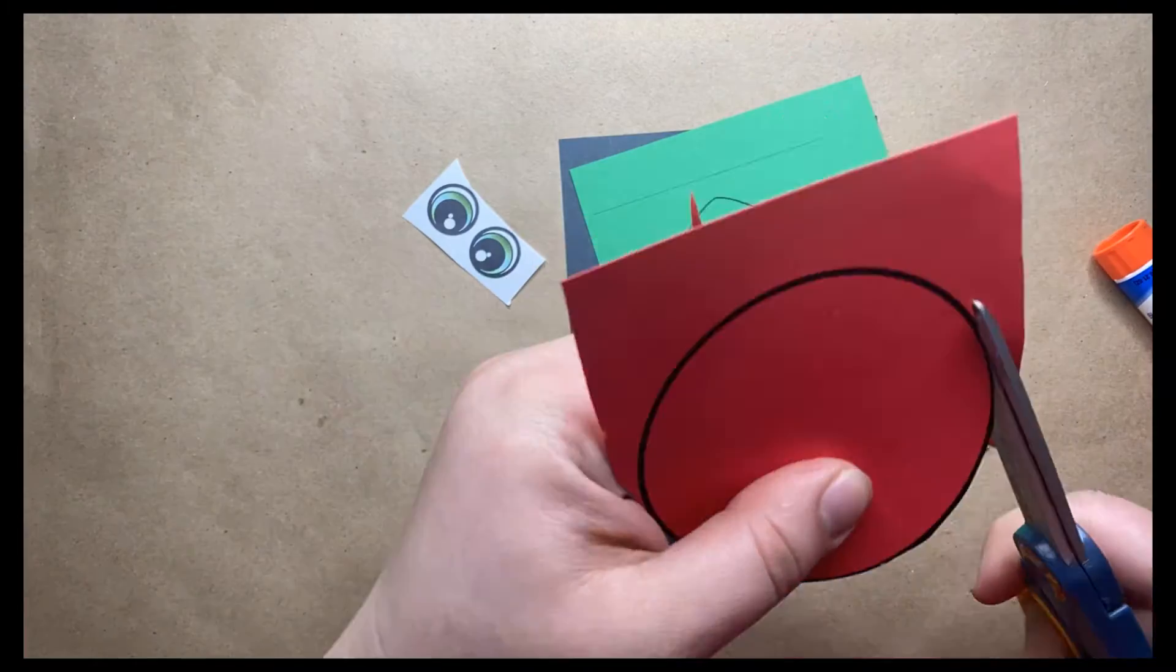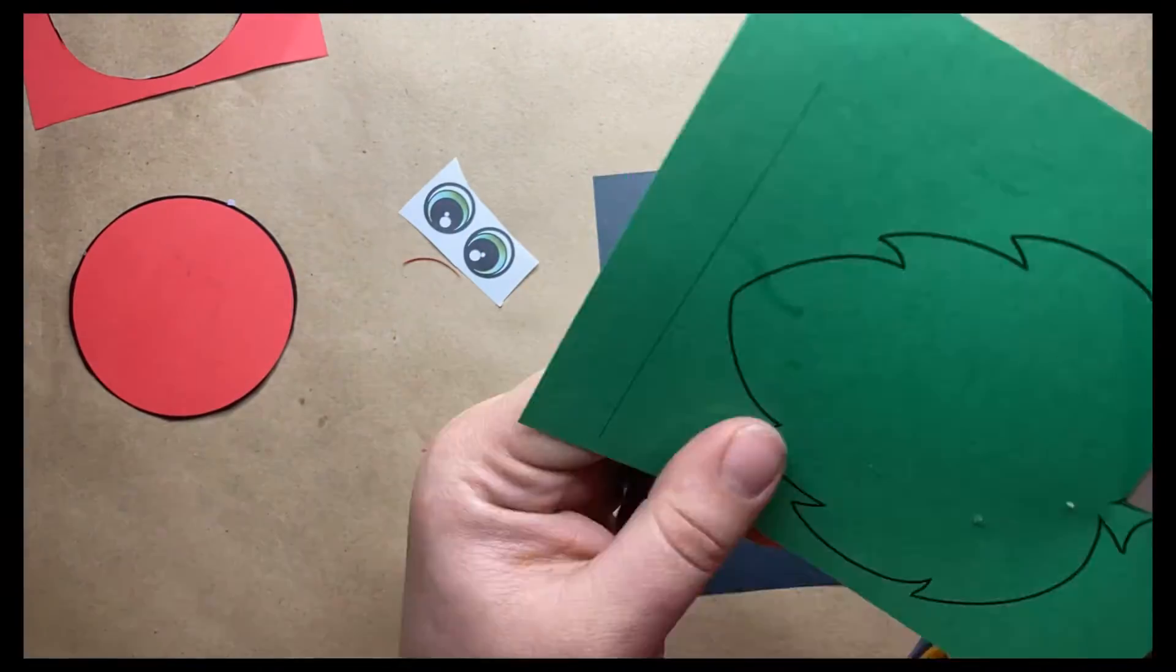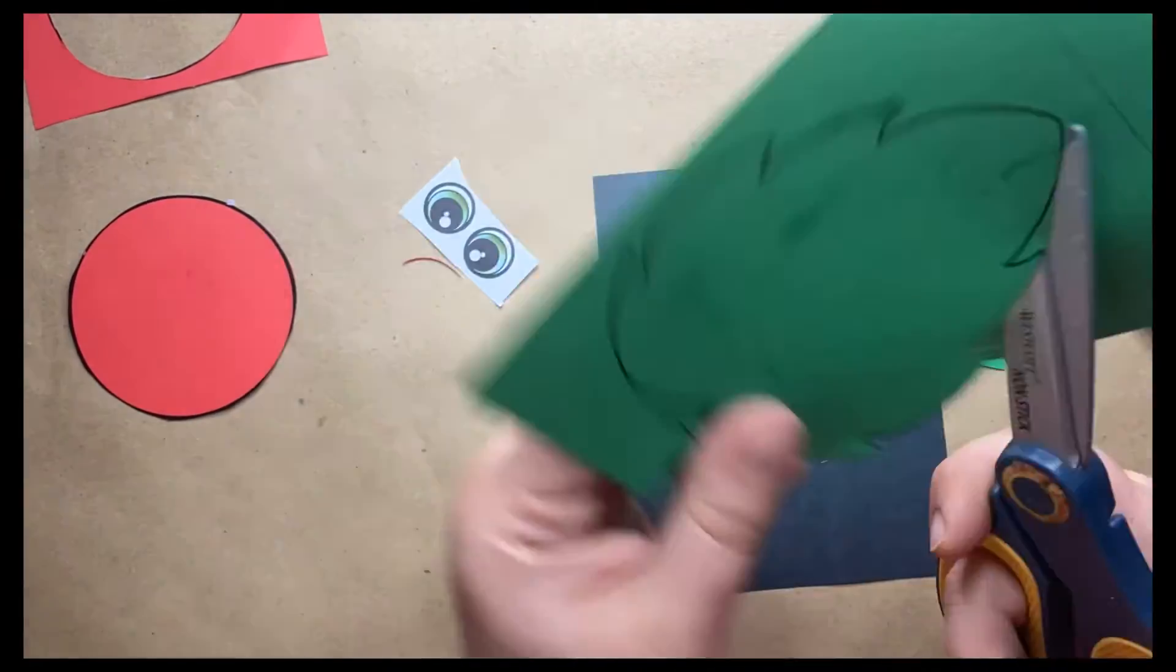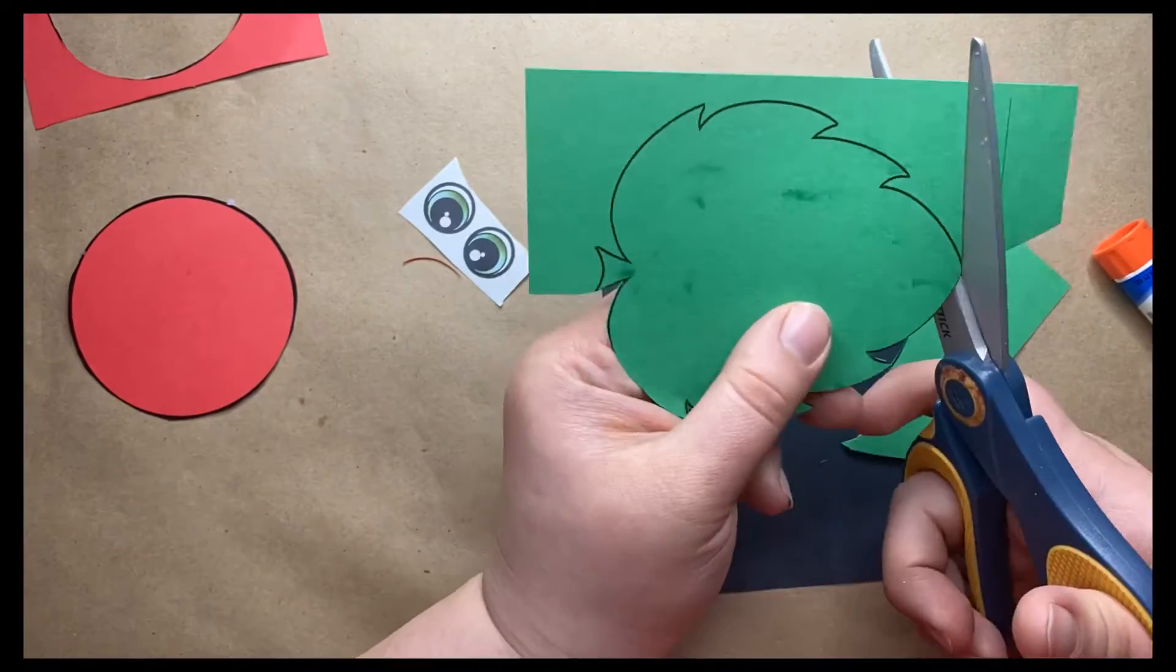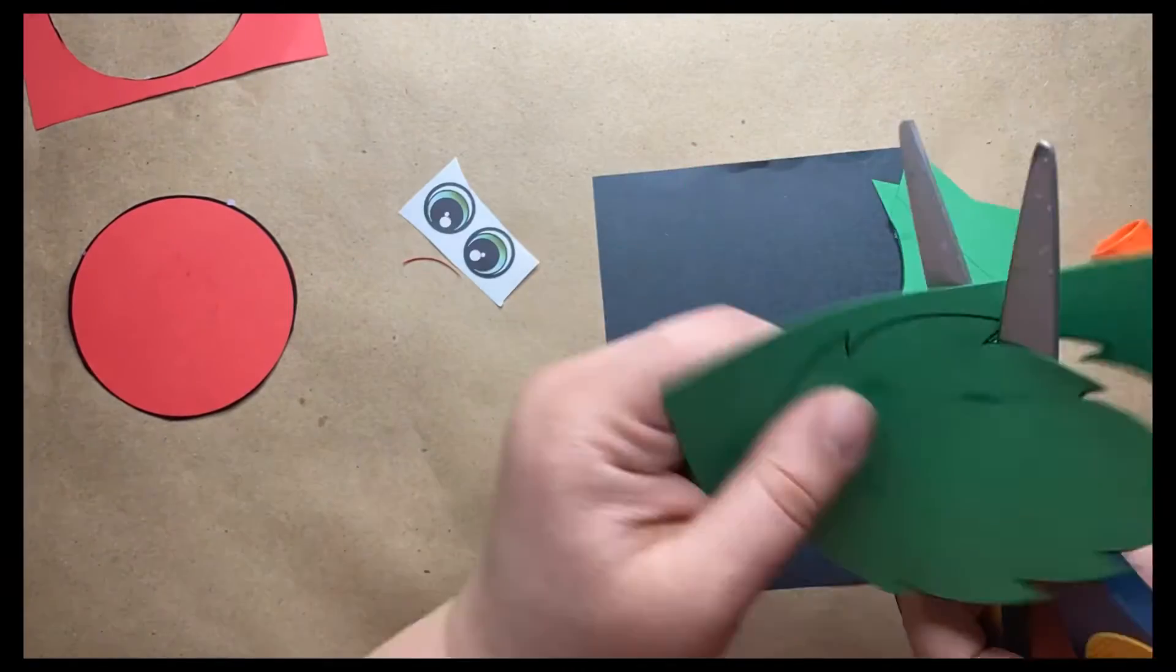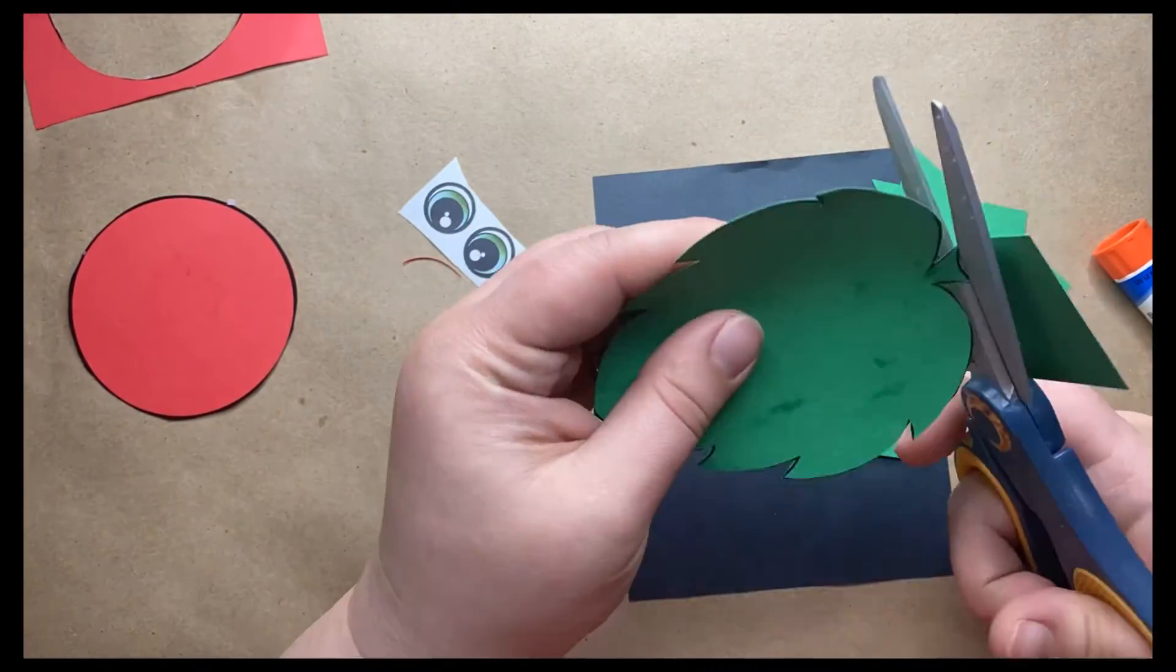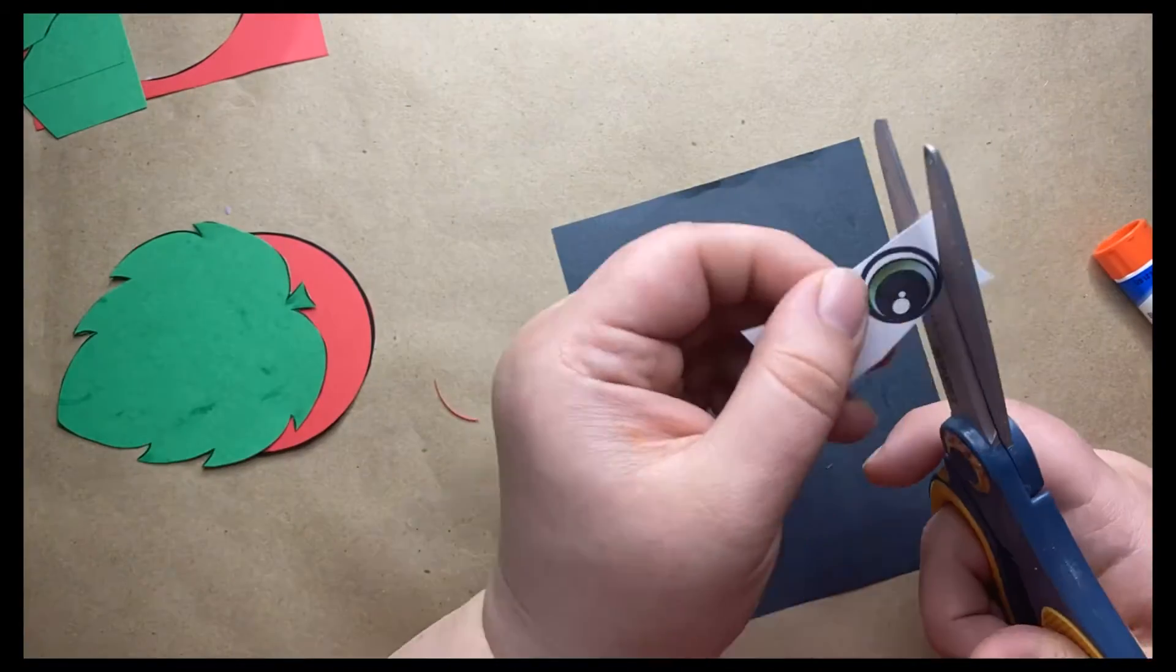Start off by cutting out all your materials. You will have a circle, a leaf, and some eyes, and you'll have a black piece of paper which I'll show you what to do with in just a second. So go ahead and cut out all your materials aside from your black piece of paper.